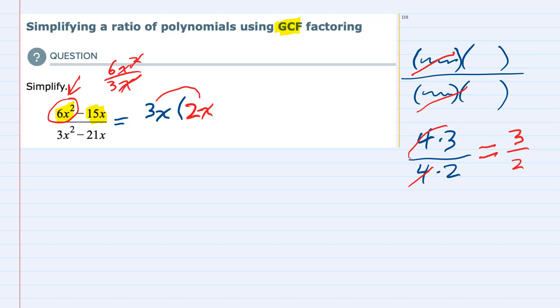Doing the same thing with the second term here, we have a 15x, so 15x divided by that 3x that I'm factoring out, the x's cancel, 15 divided by 3 is 5. And I can check this because 3x times minus 5 would give me the minus 15x. So we factored out a 3x from the numerator.